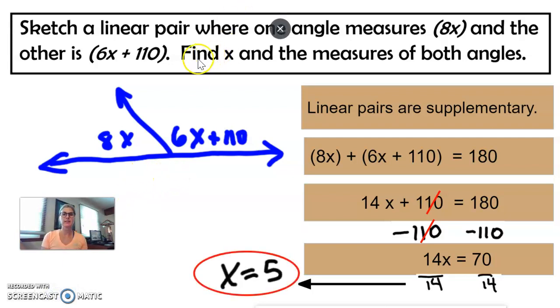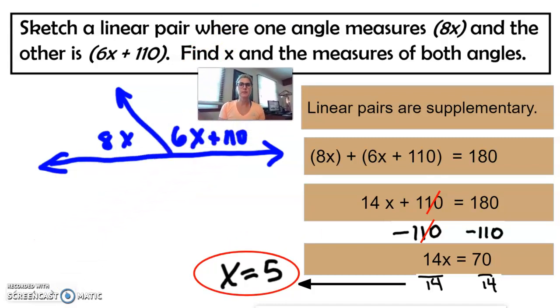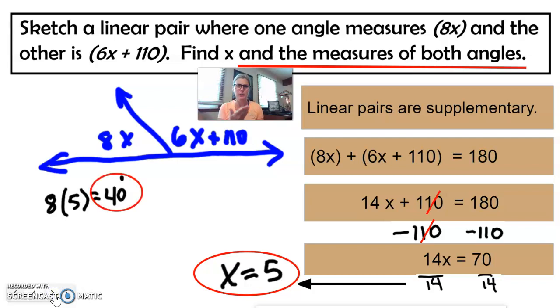Sweet. Now, it says find X. Are we done? And hopefully you had said nope, because I'm seeing that we have to do one more thing. It says find the measures of both angles. So let's make the substitution. We know that X now is 5, so 8 times 5 is 40 degrees. Got one of the angles. So the other one, we should already know, oh, that's a linear pair, so 140 more degrees. You can do that, and that's fine, but I'm also going to do the substitution and show you that it indeed is 140.